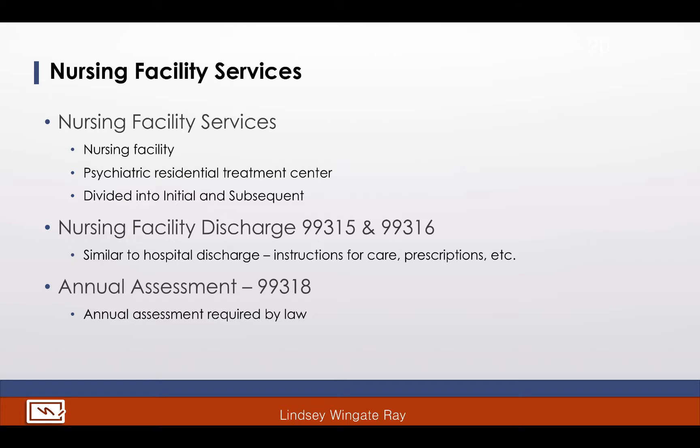The next category of E&M is Nursing Facility Services. The guidelines pertain to care that is given in a nursing facility as well as services provided to a patient in a psychiatric residential treatment center. You should write that next to this guideline and in your index. Nursing Facility Services are divided into initial care and subsequent care. This section does not distinguish between new and established patients. Services performed at other sites performed with the admission were considered inclusive and are included in the nursing facility admission. Exceptions to this are hospital discharge and observation discharge services billed on the same date — these may be reported separately.